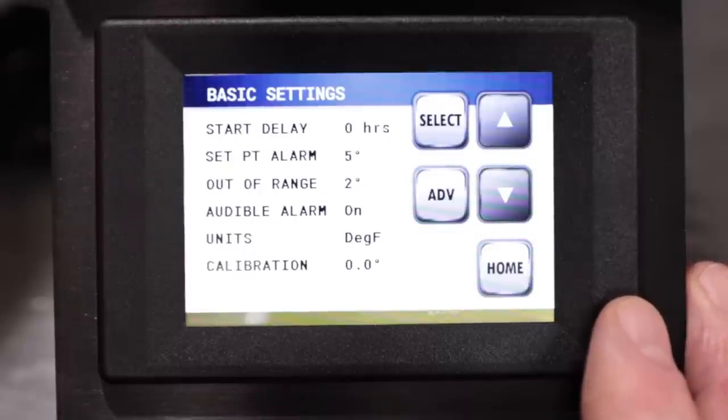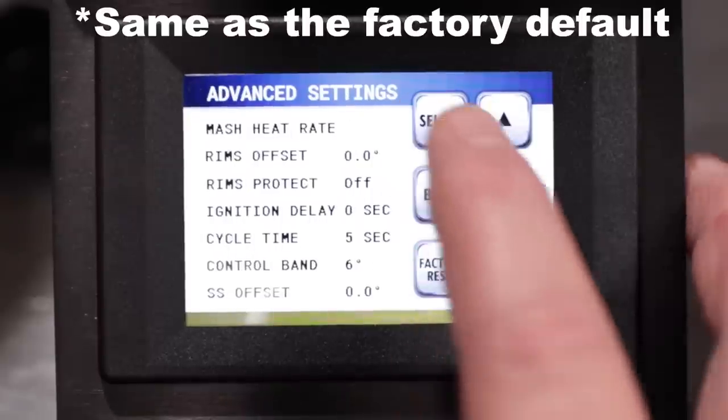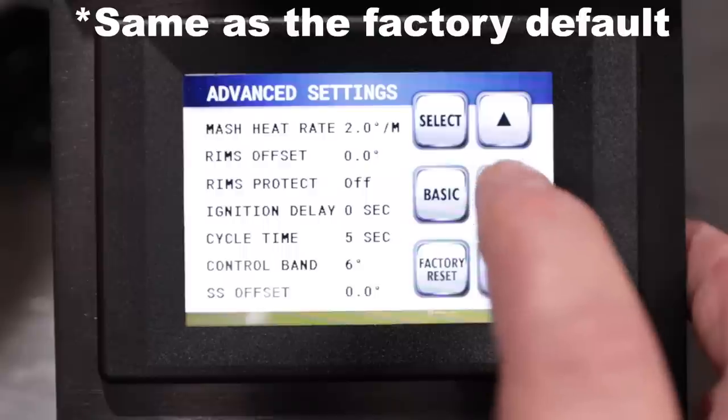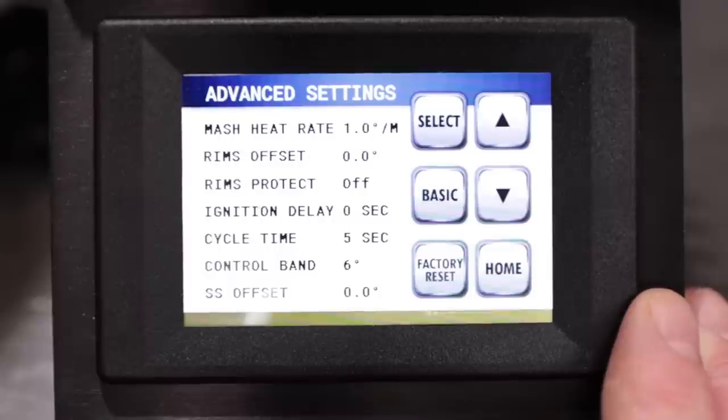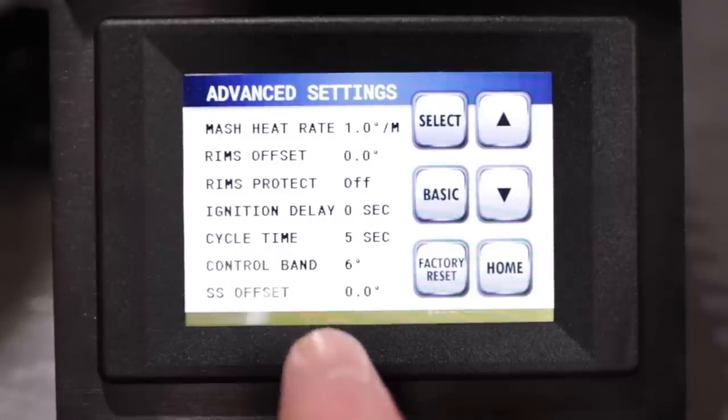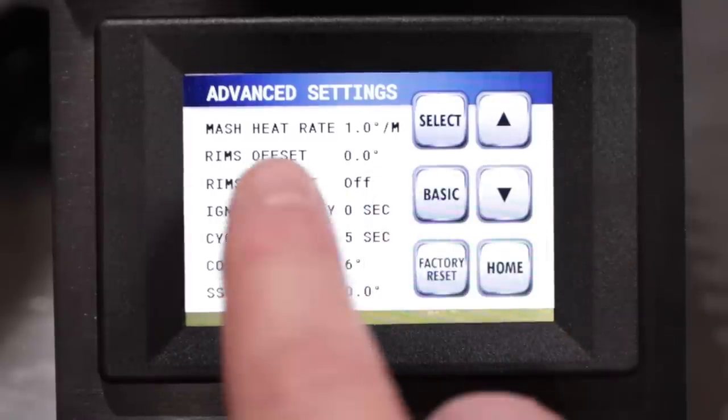Alright, so let's take a look at the HERMS setup. Basically everything is going to be about the same. The only thing you're going to change is in that mash heat rate there. You're going to lower that down to one degree per minute. Now again, as I said before, you may want to adjust that as you go. And then certainly the other thing you have to look at too is the RIMS offset, and don't let the name RIMS fool you.